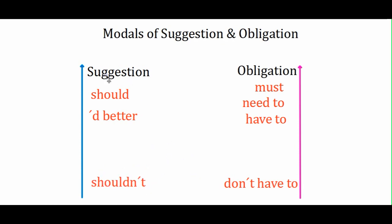This is the strength of a suggestion. If we say 'should', 'ought to', or 'had better', that's a strong suggestion. Obviously, if we say 'shouldn't', it means we suggest that they don't do something. For obligation: 'must', 'need to', and 'have to' represent a strong obligation. And if it's negative — 'don't have to' — that means it's not an obligation.